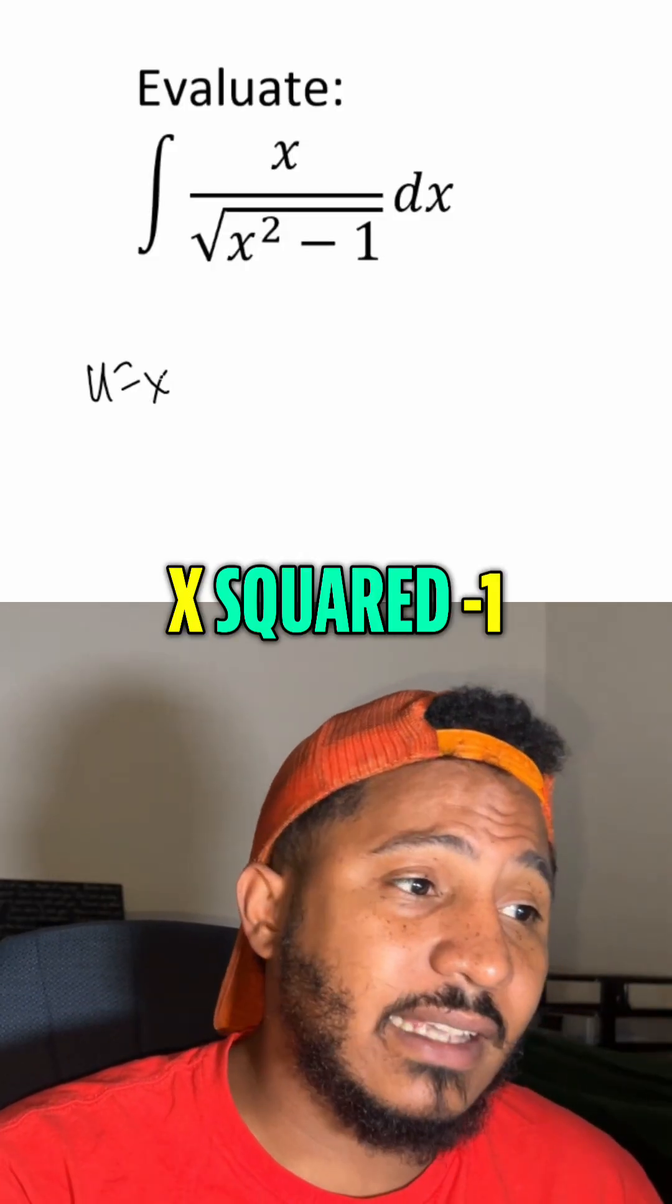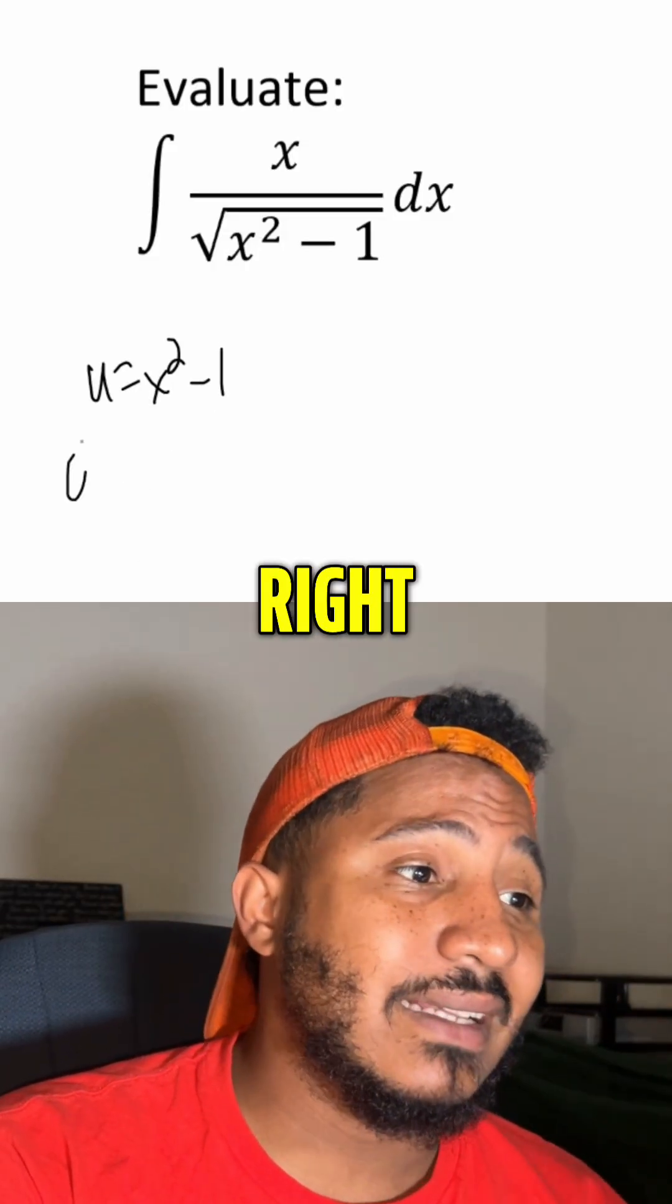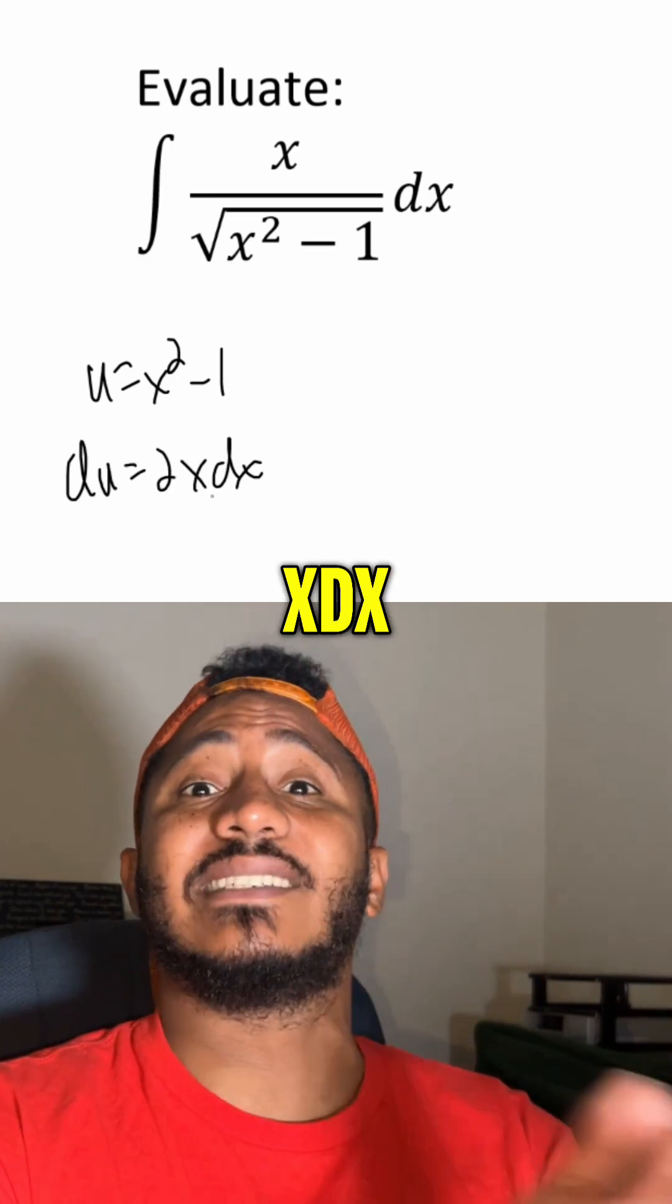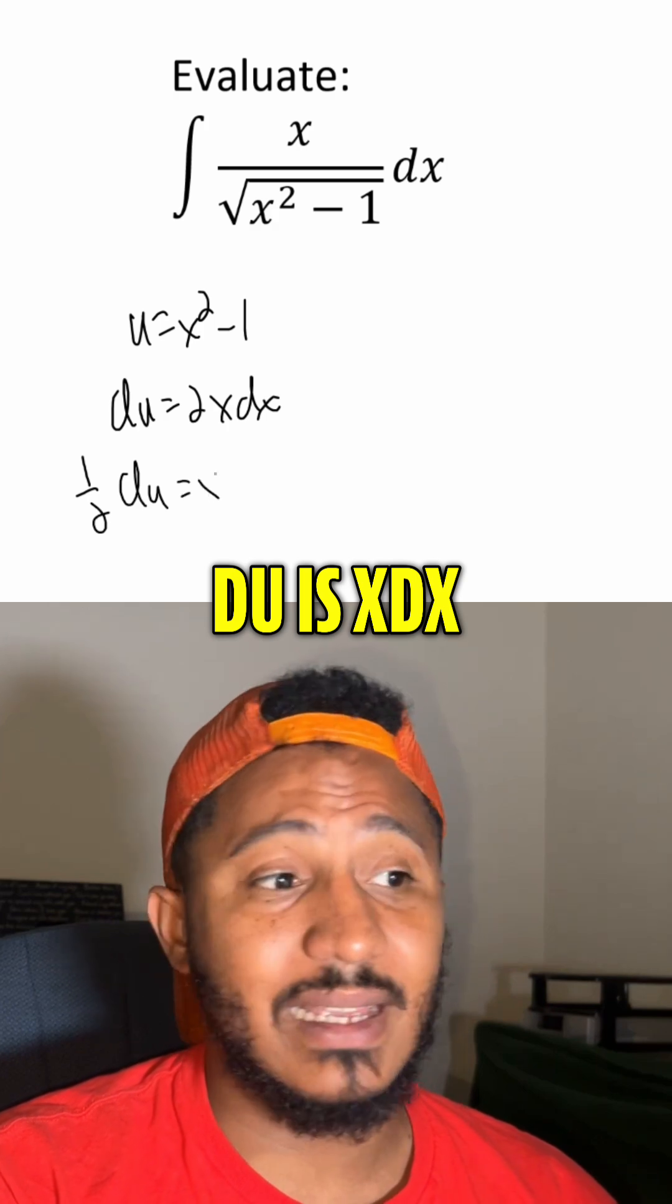If we let u equal x squared minus 1, is the du in the problem, at least the variable part? du is 2x dx, which we have an x dx in the problem. We don't have the 2, so we can just say half of du is x dx.